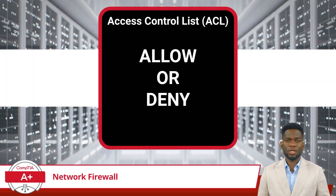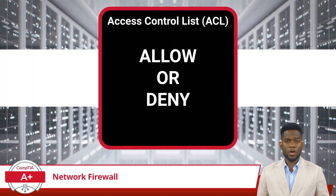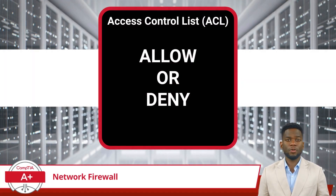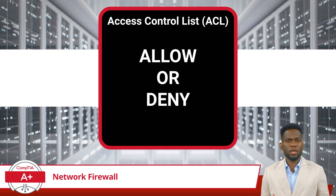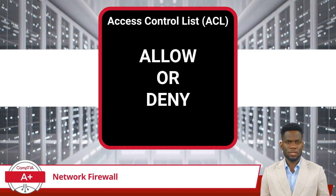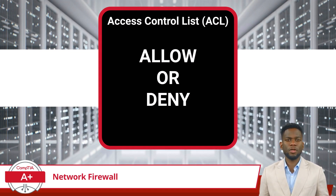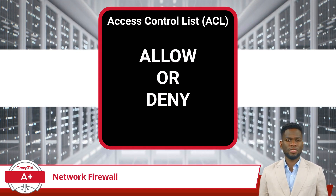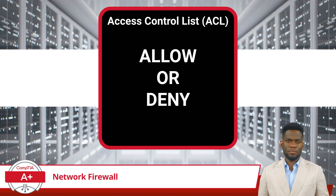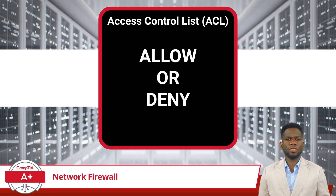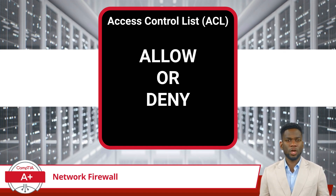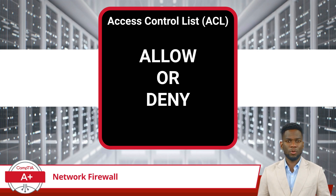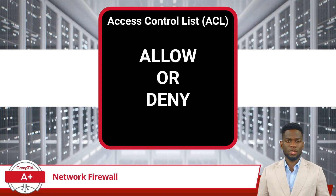The security rules and policies used by network firewalls are often implemented using a mechanism known as an access control list, or ACL. An ACL defines the specific criteria that determines whether network traffic will be allowed or denied by the firewall.